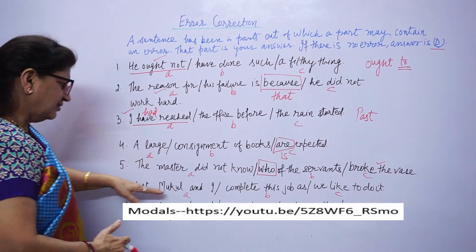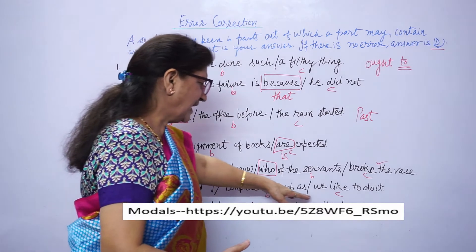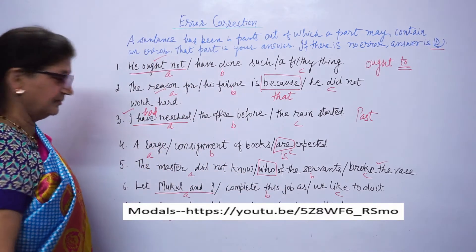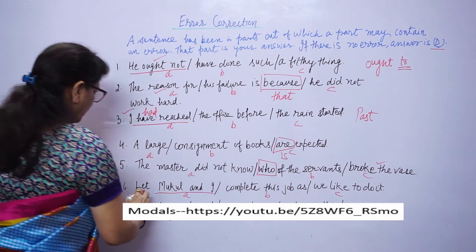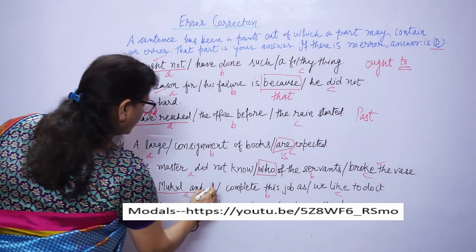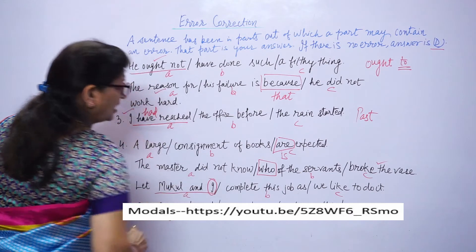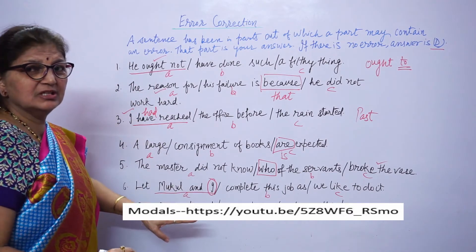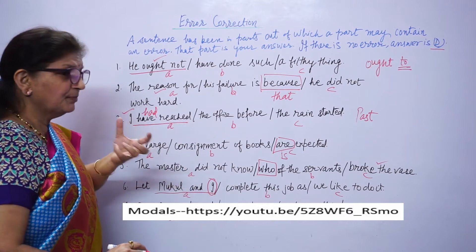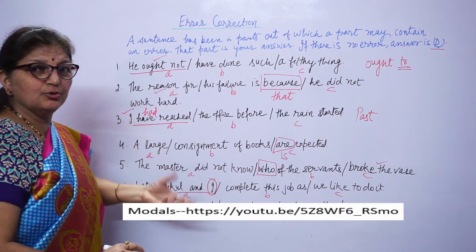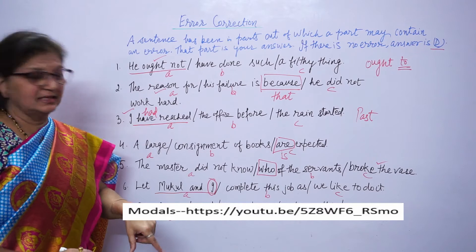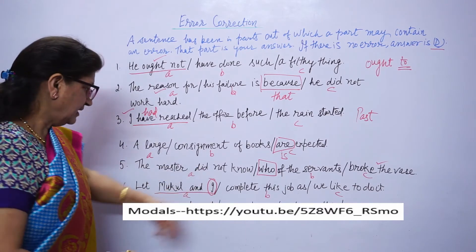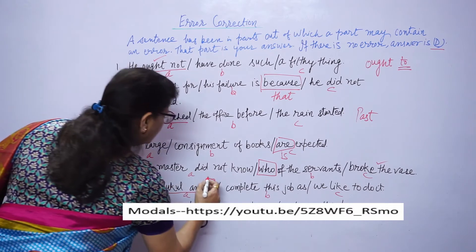Next let Mokul and I complete this job as we like to do it. Error is here. With let, object form of pronoun is used. You used the name correctly, but when we use pronoun, its object form should come: me, us, you, him, her. Here, let Mokul and me.